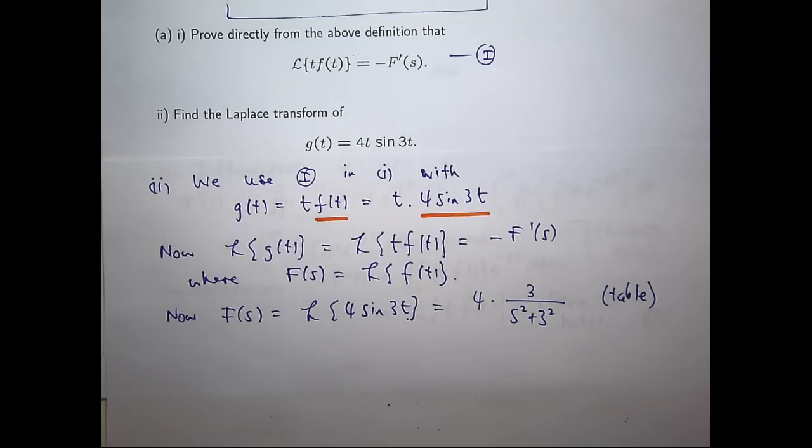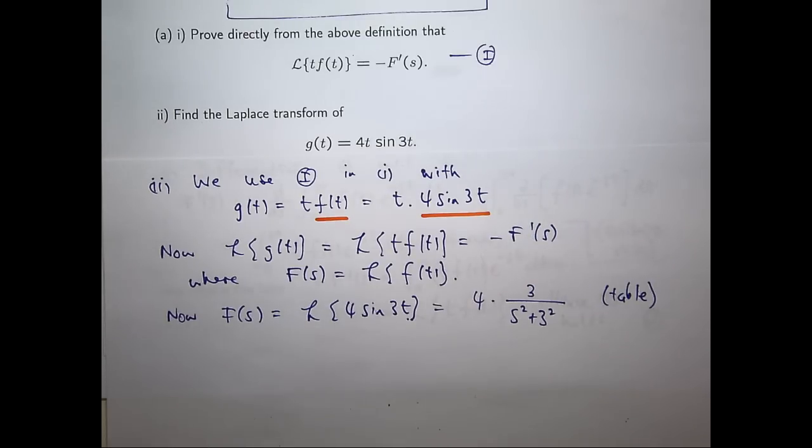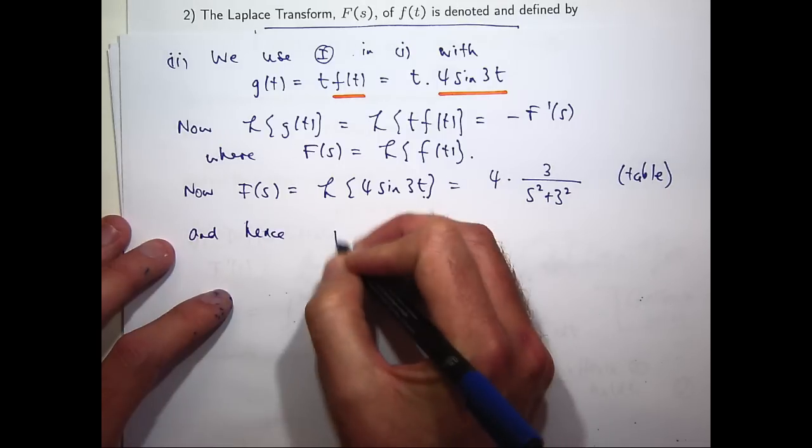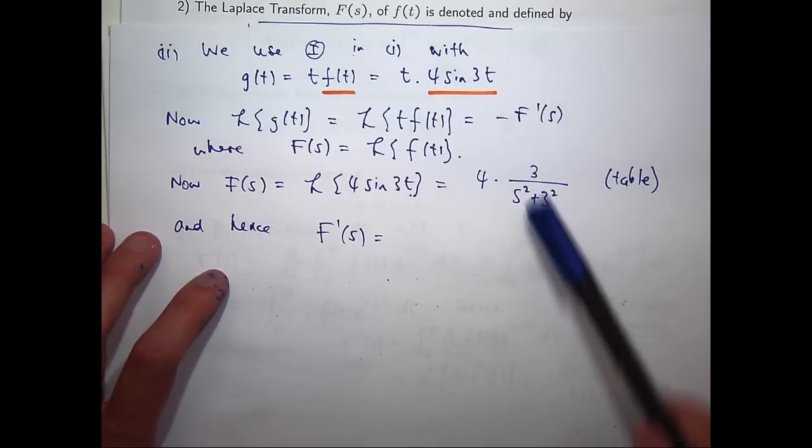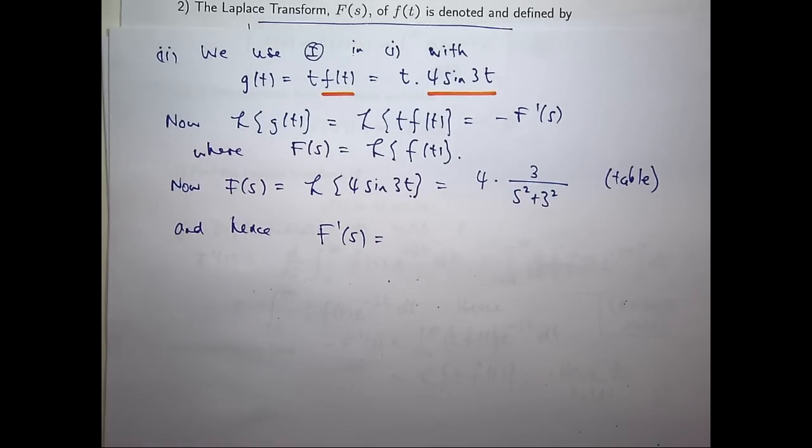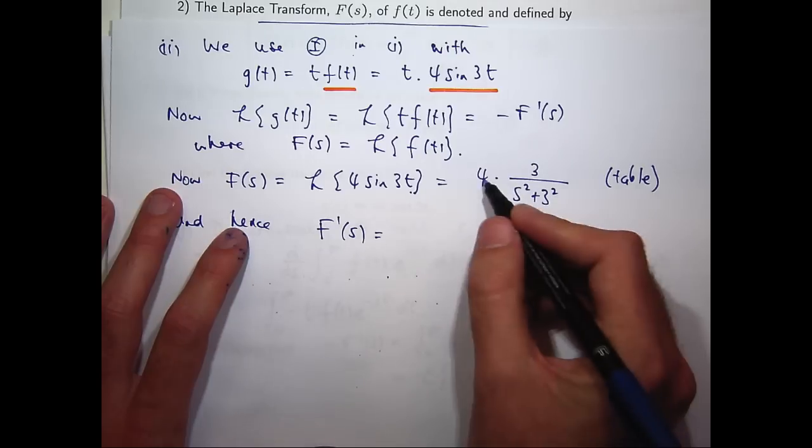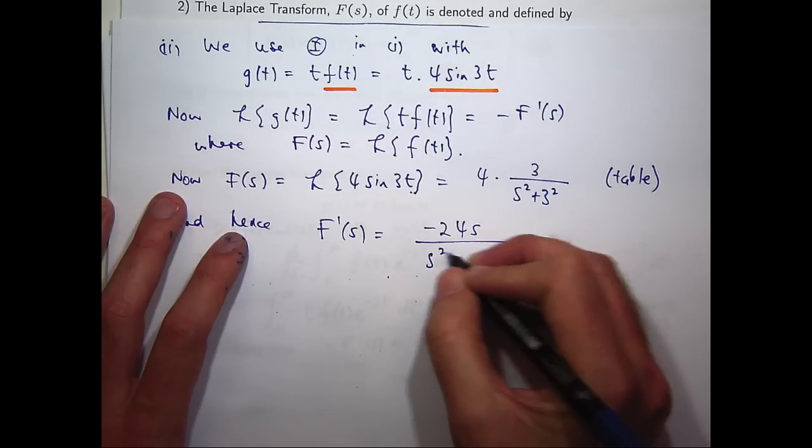So now what I want to do is, in order to produce this, I want to take what I've got, differentiate it with respect to s, and then just multiply it by negative 1. So if I differentiate this with respect to s, well, I'm going to get something like a minus 2s on the front, on the top, from there. So that's going to connect with this. I'm going to get minus 24s on the top, and I just square the bottom.